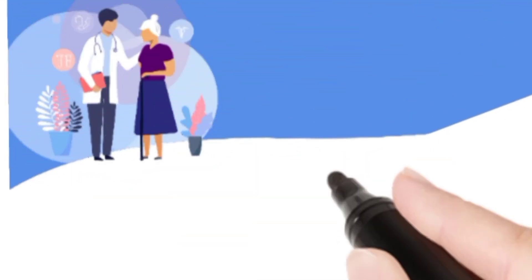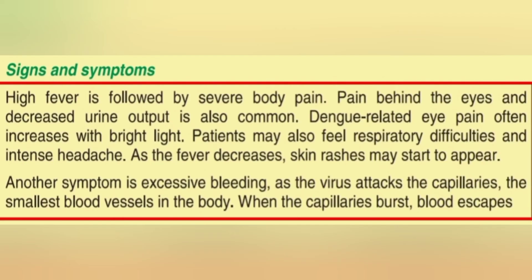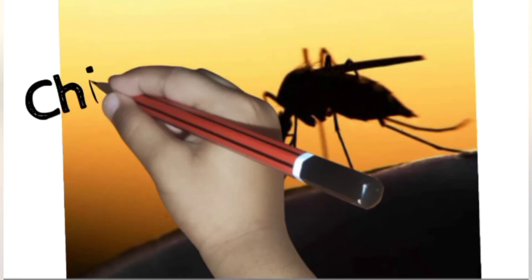Now let's discuss the signs and symptoms of dengue. The signs and symptoms are: severe body pain, intense headache, skin rashes, and sometimes respiratory difficulty. Excessive bleeding is also a symptom when the virus attacks the capillaries — the smallest blood vessels in the body. In some severe cases, bleeding is common in the nose, and it can lead to decreased blood pressure, internal bleeding, shock, and death.